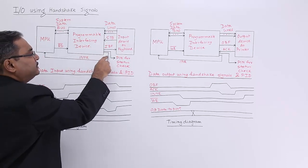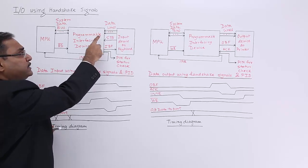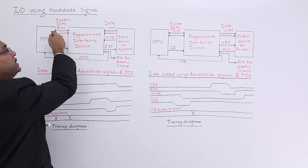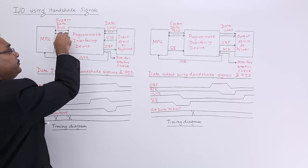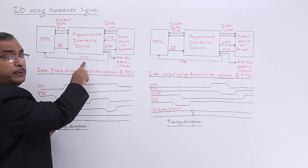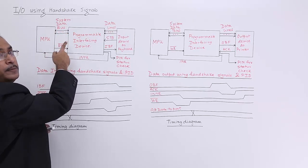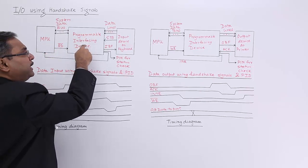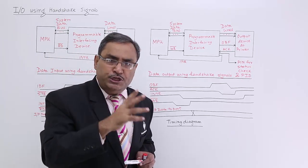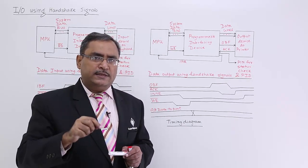The programmable interfacing device will then make the interrupt request line enabled to the MPU, indicating that a new byte is waiting in its input port buffer — please read it. When the MPU finds time, it makes the RD-bar line enabled and reads the data from the port through the system data bus. While reading, the PID makes the interrupt request line disabled. After reading, the MPU disables RD-bar, and the PID disables the input buffer full line to indicate to the input device that the data has been processed and read. This completes the cycle, which repeats each time a key is pressed.